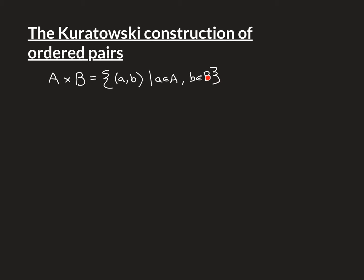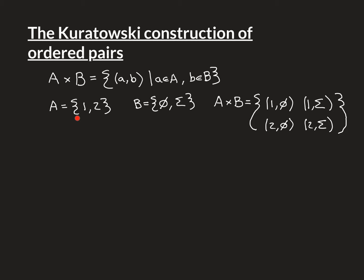To give a concrete example, let A equal the set containing the symbols 1 and 2, and let B equal the set containing the empty set φ and then another symbol σ. Then we know that the Cartesian product of these two sets — the set of all ordered pairs — contains the two ordered pairs with 1 in the first position paired with both options from B, and then the two ordered pairs with 2 in the first position paired with both options from B. Those are all possible ordered pairs, and that whole set is called the Cartesian product in Naive Set Theory.